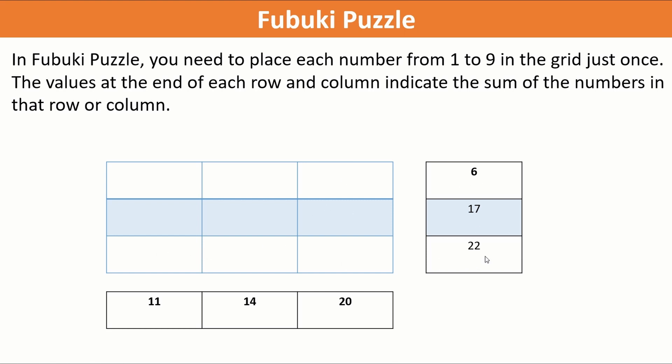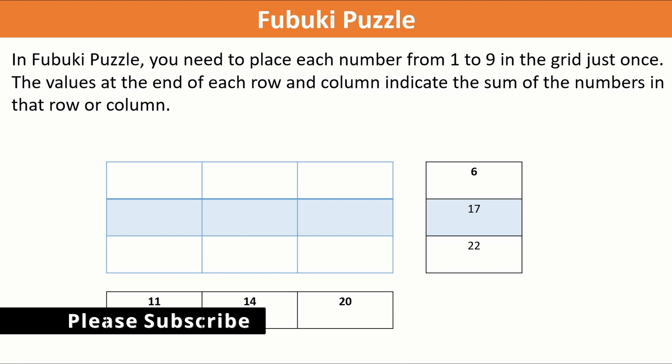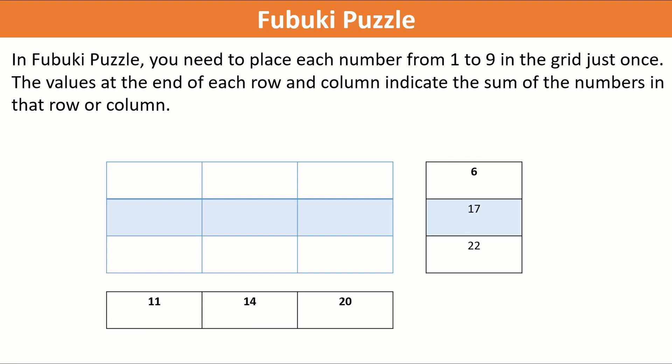So the first row is 6, then the second row is 17, then the third row is 22. So let's go to the columns. Column 1 is 11, column 2 is 14, column 3 is 20.